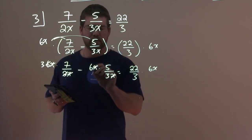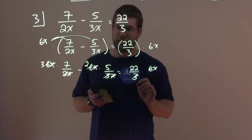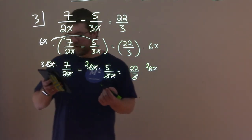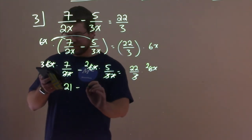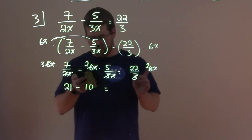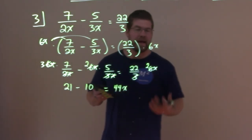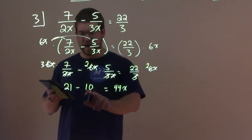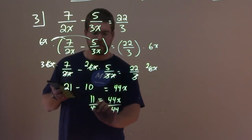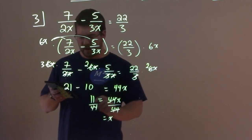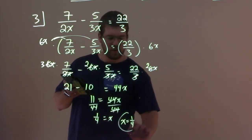We simplify what we can. The x's cancel and 6 and 2 leaves us with a 3 in the numerator. Then x's cancel and 3 and 6 leaves us with a 2 in the numerator. On the right-hand side, the 6 becomes a 2. So 3 times 7 is 21, 2 times 5 is 10, equals 22 times 2x which is 44x. Our goal is to get x by itself: 21 minus 10 is 11, so 11 equals 44x. Divide both sides by 44, and x equals 1 fourth.